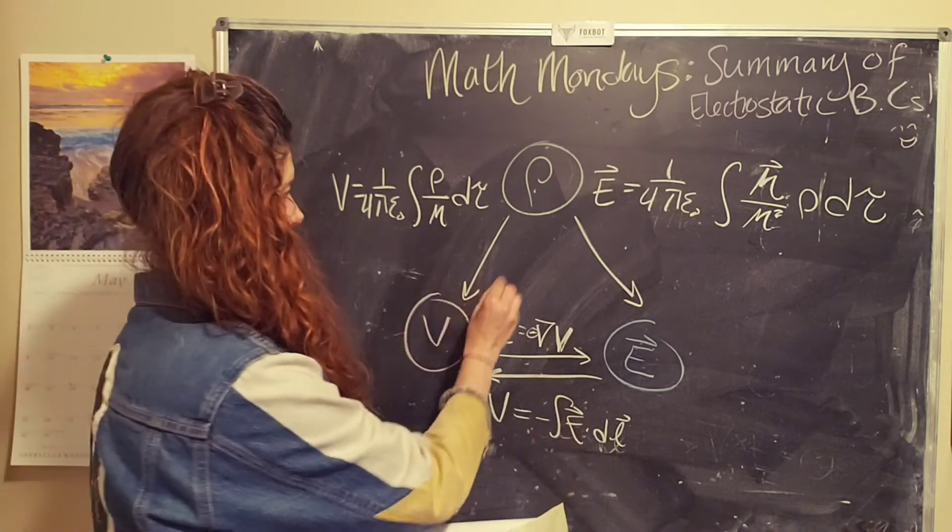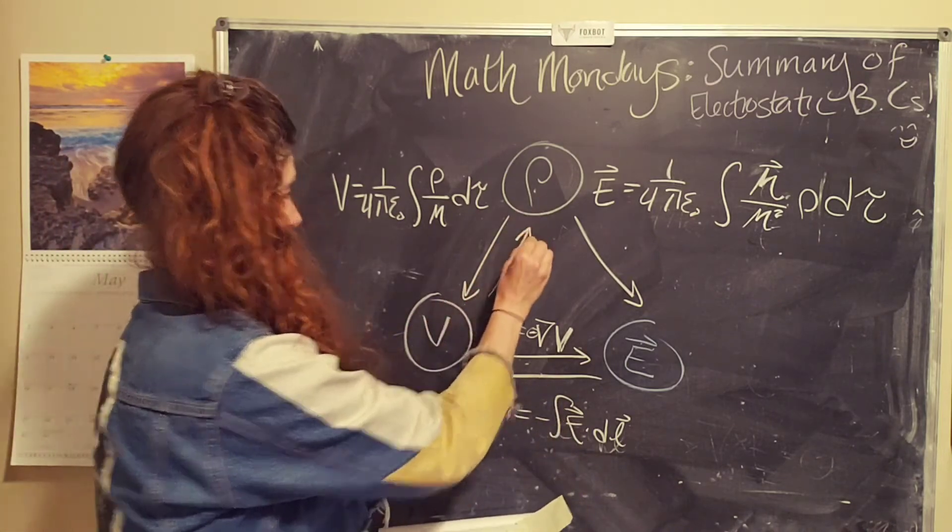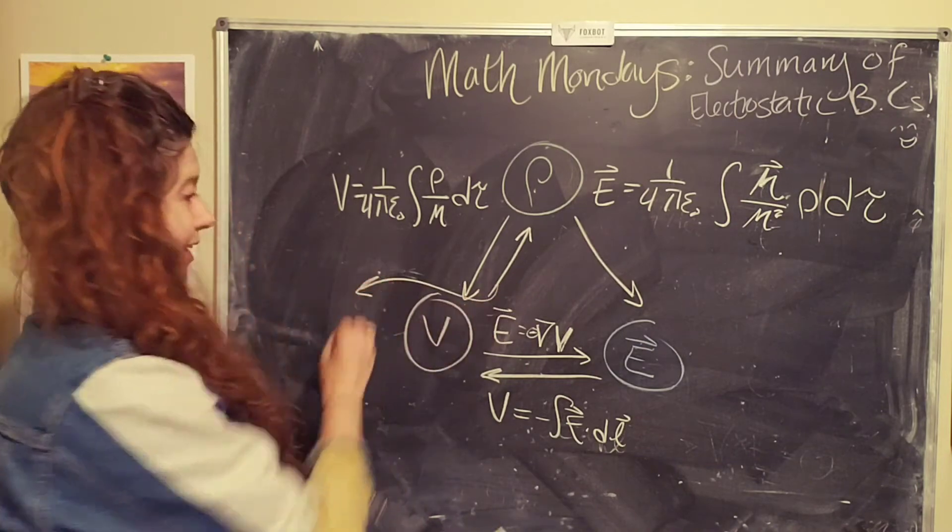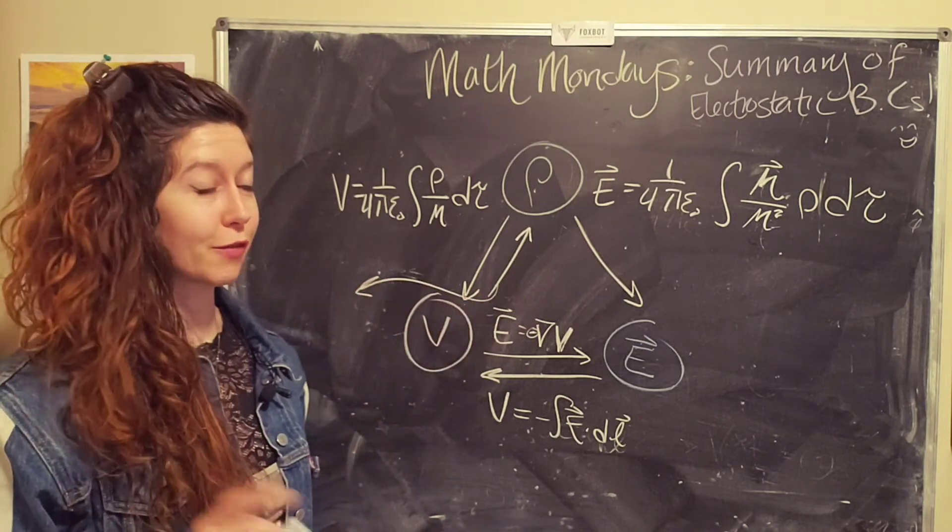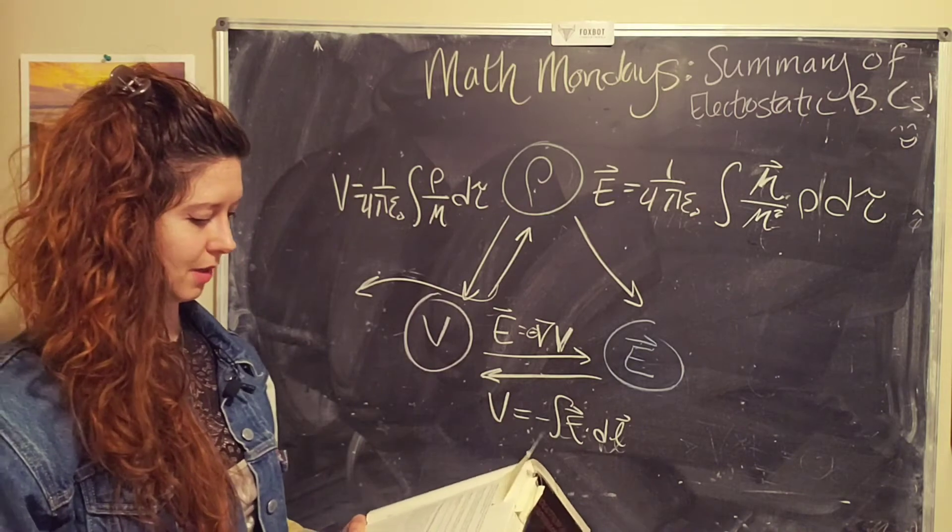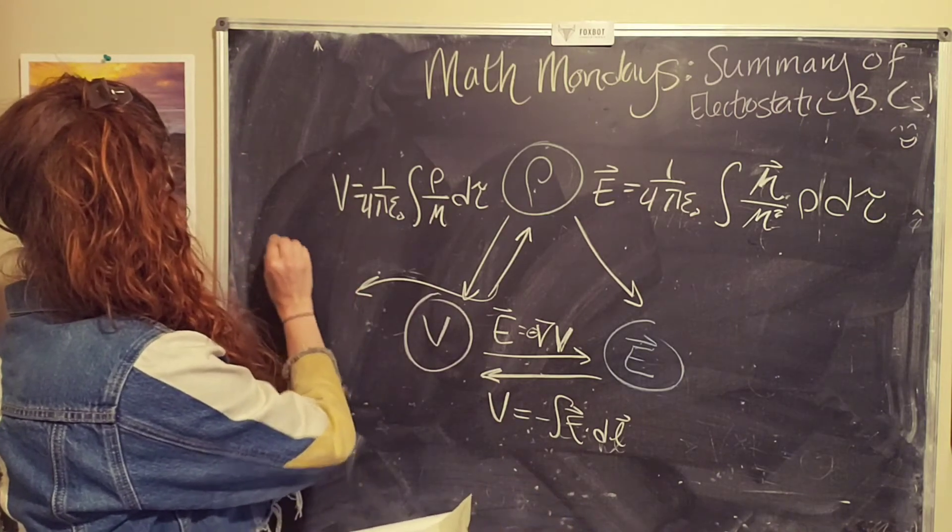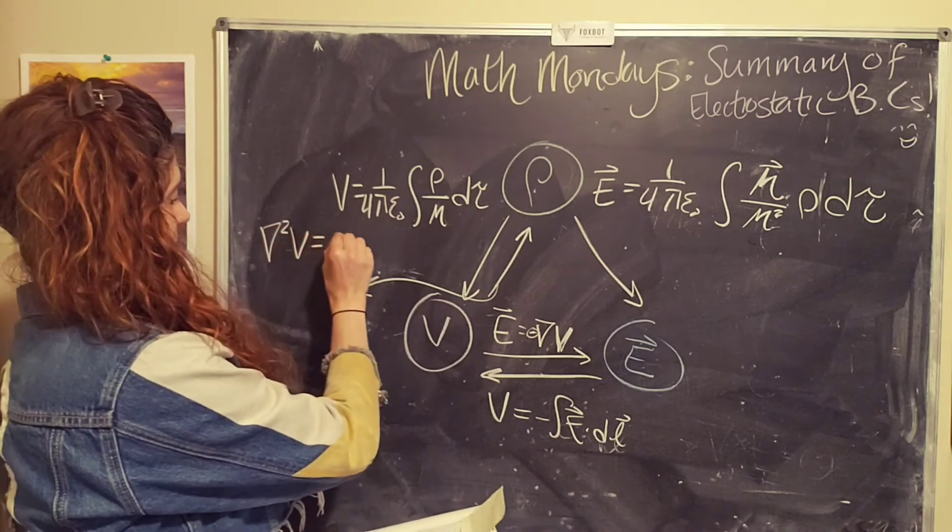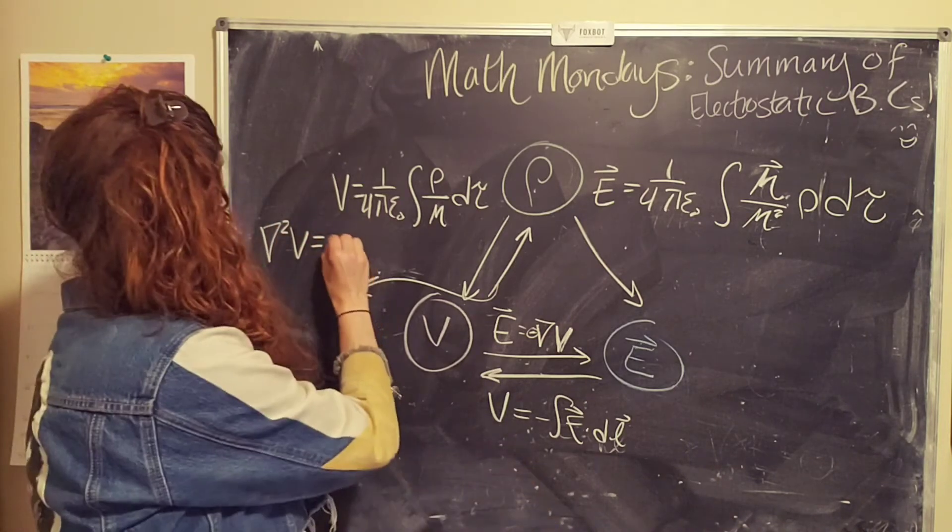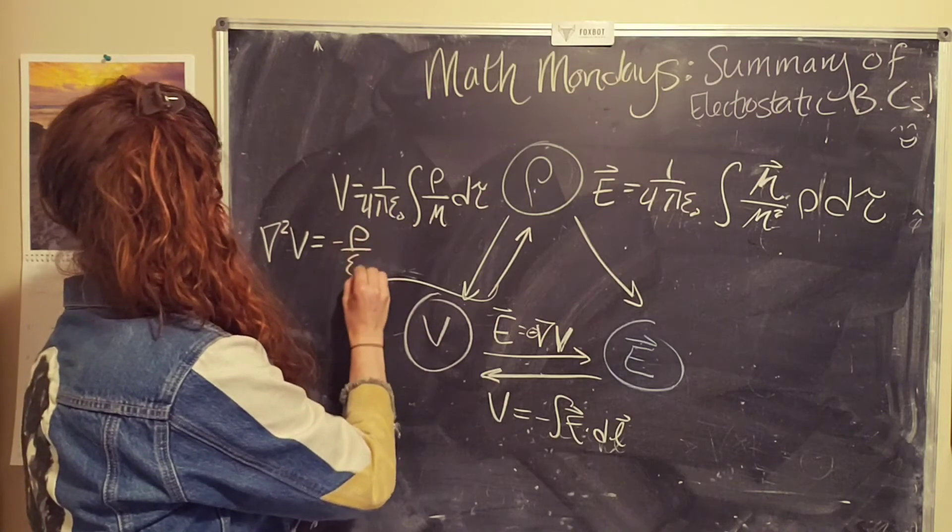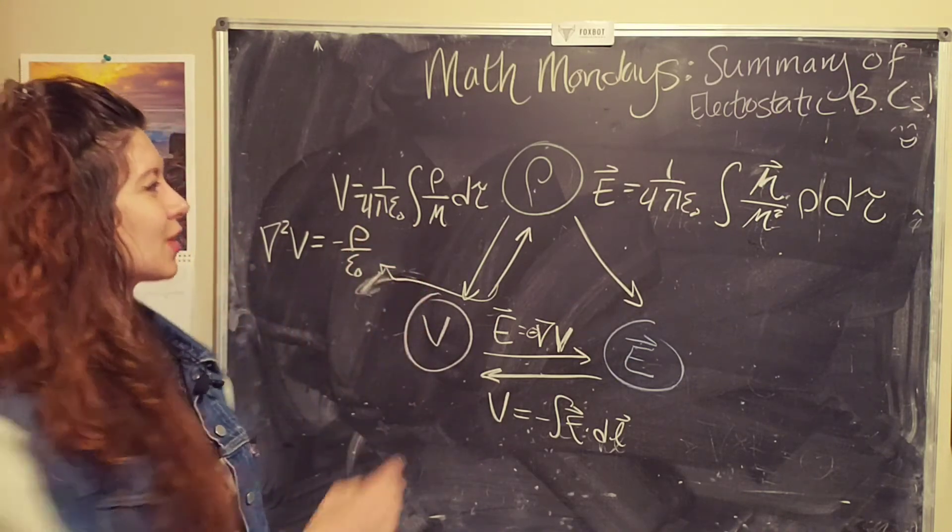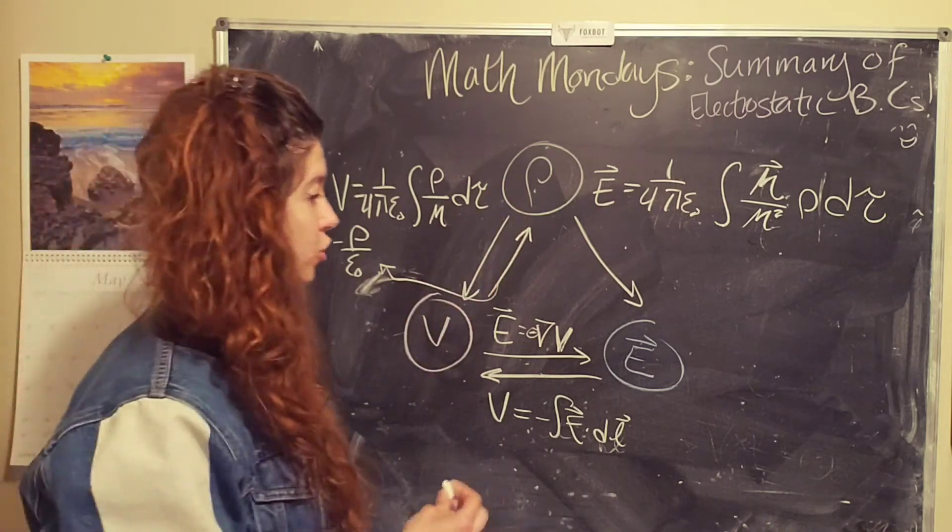You also can get the charge distribution from the electric potential. I like to say electric potential to confuse it from just potential because that makes me think of potential energy. So this is going to be the Laplacian. So del squared V equals, I think it's negative, yeah, negative rho over epsilon naught. That arrow doesn't point there. Okay, there we go. So that's how you can get charge distribution from the potential energy.